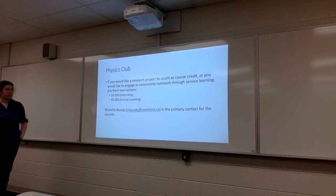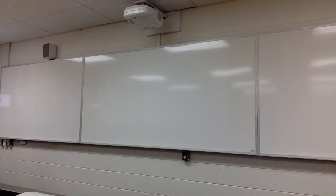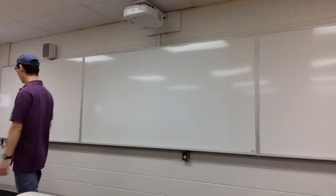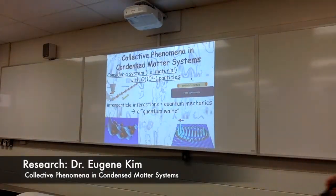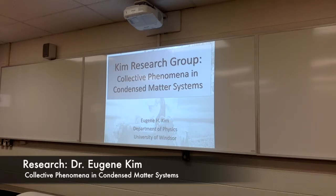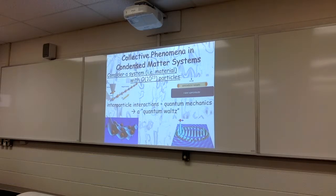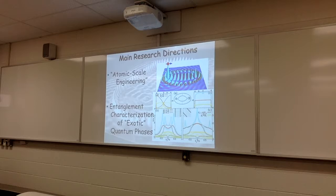So my research is a big overview could be described as collective phenomena in condensed matter systems. So what does this mean? So in a condensed matter system, we're interested in materials. And here you have order 10 to 23 particles. And these particles, they interact with each other. So when you combine the interactions between the particles and quantum mechanics, one can get very beautiful types of behaviors, which has eloquently been described as quantum walls.